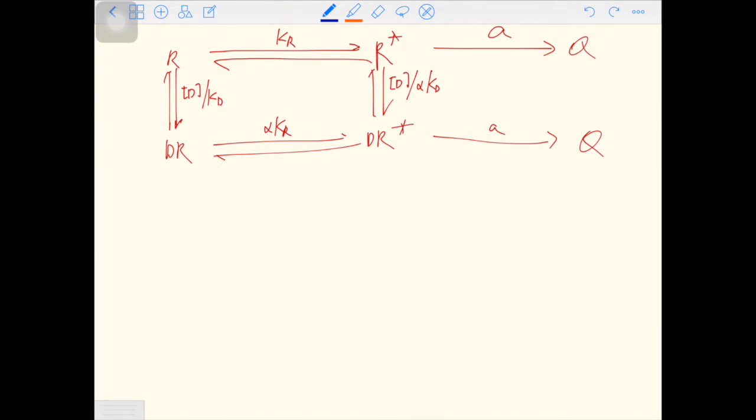So the receptor can be in four different forms in this system, which means the equation of state RT equals R plus R star plus DR plus DR star. Two of the four terms will generate the response. So Q, the response, is made up of two terms.